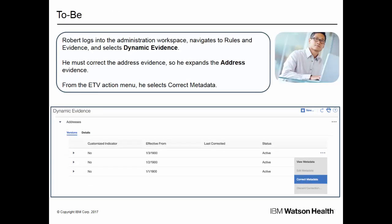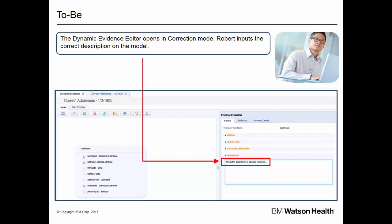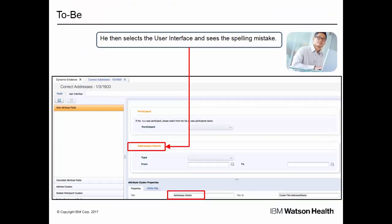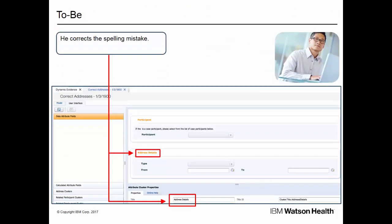In this scenario from Kuram version 702, Robert logs into the administration workspace. He navigates to the rules and evidence section and selects dynamic evidence. He must correct the address evidence, so he expands the address evidence. From the ETV action menu, he selects 'Correct Metadata.' The Dynamic Evidence Editor opens in correction mode. Robert inputs the correct description on the model. He then selects the user interface and sees the spelling mistake. He corrects the spelling mistake.